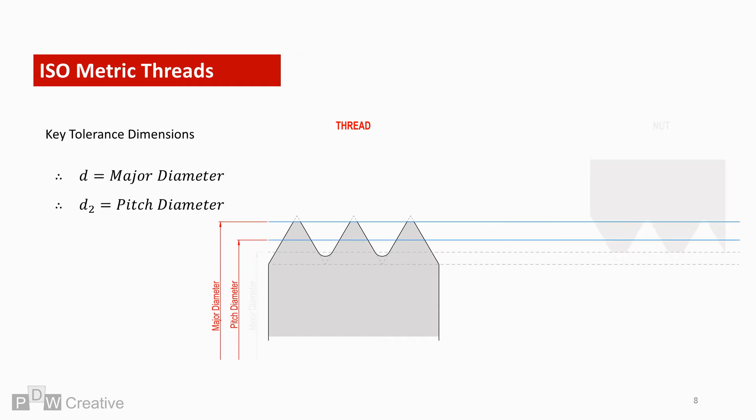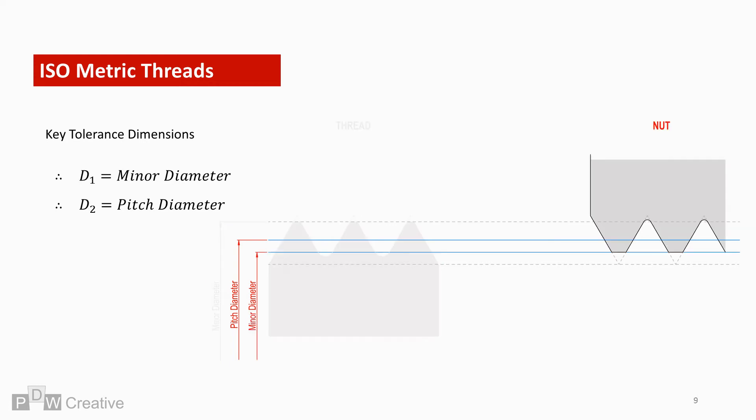For the screw thread, we will only focus on the major and pitch diameters. We'll call these D and D2 respectively. While for the nut we will focus on minor and pitch diameters. Let's refer to these as capital D1 and D2.